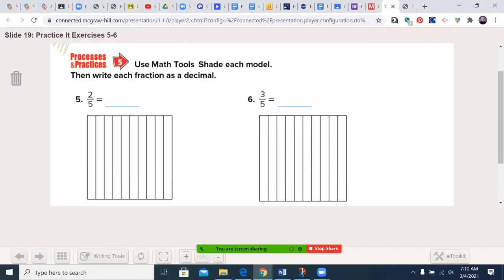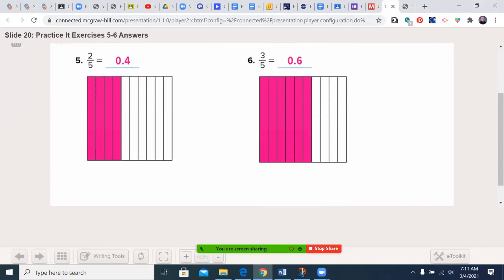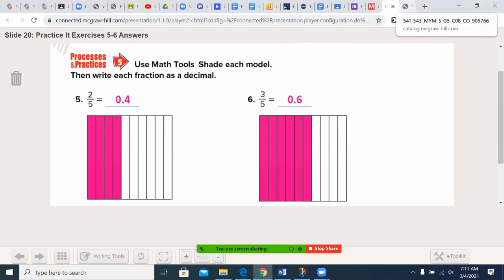Two-fifths and three-fifths. Go ahead and pause the video and unpause the video when you're ready to check your answers. Welcome back. Let's see how you did. Well, this became 4 tenths, which is 0.4. This became 6 tenths, which is 0.6. At this point, I'm going to send you off to the assignment.